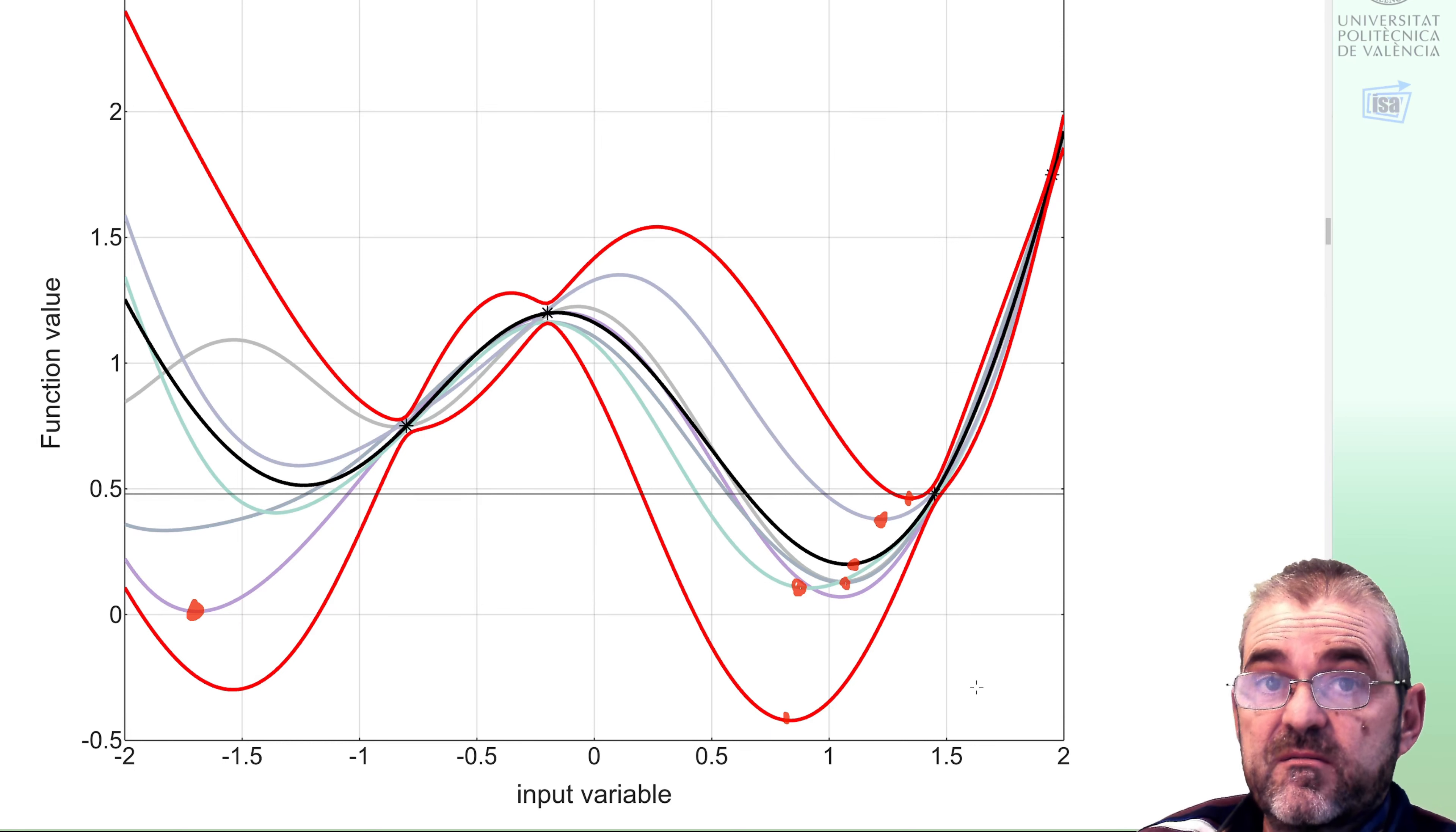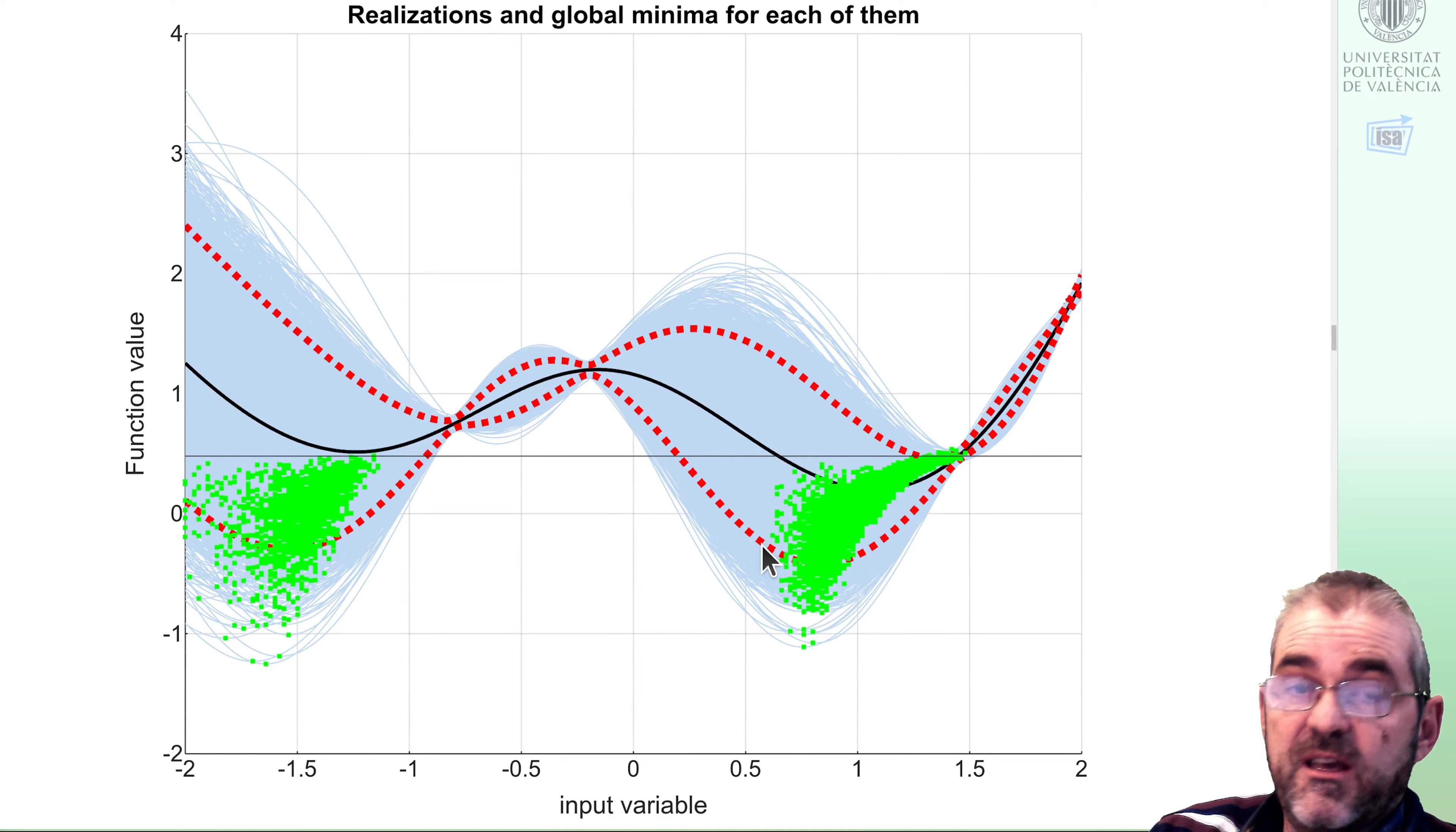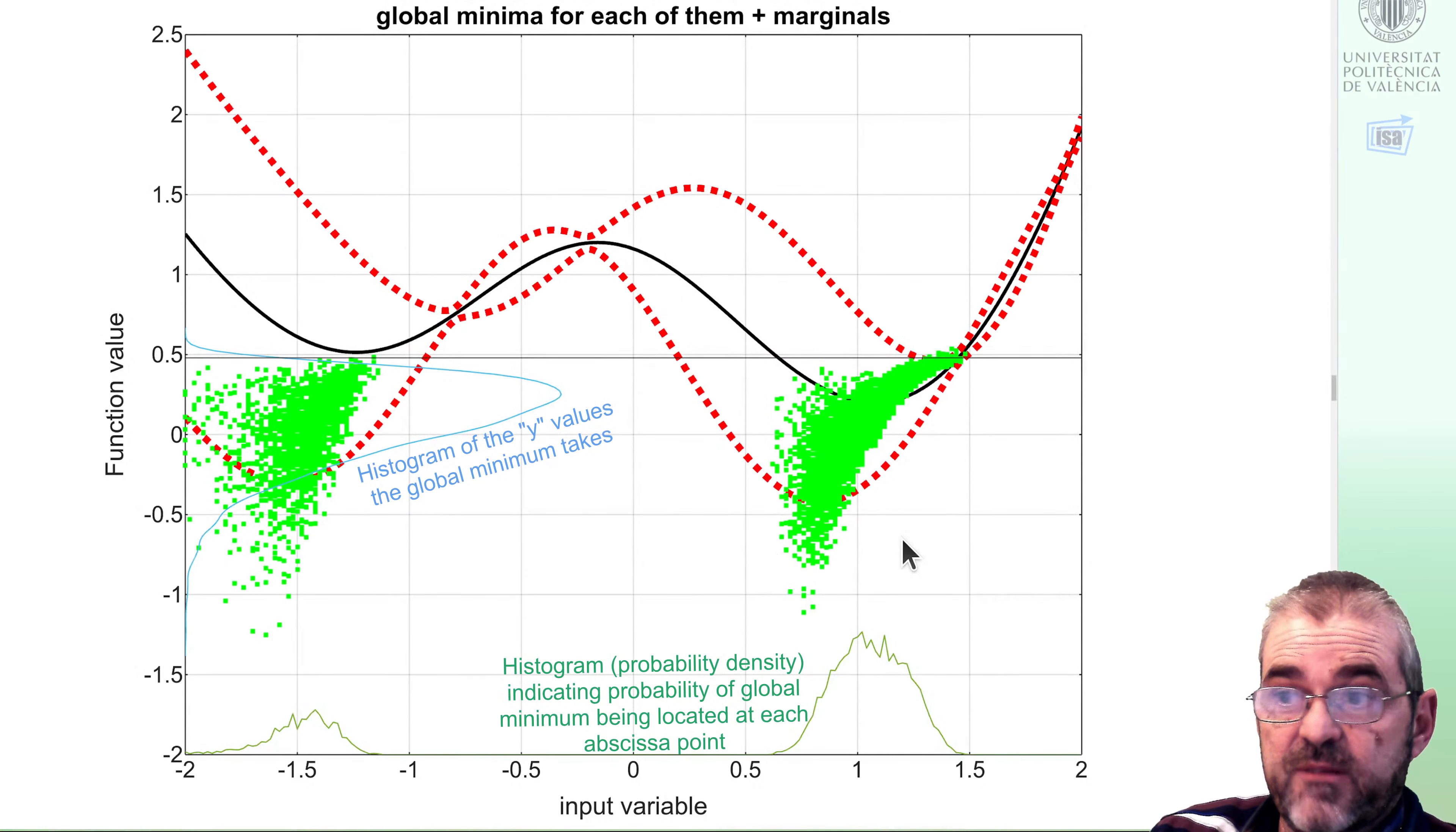If I repeat that several thousand times, say eight thousand times, then here we have a cloud of green dots indicating eight thousand positions of the global minimum. In here, I have the marginal histograms on the position of the global minimum in green here and the actual value of the global minimum. Basically, the most likely point for the global minimum to be will be x equal one. So we may consider this the gold standard.